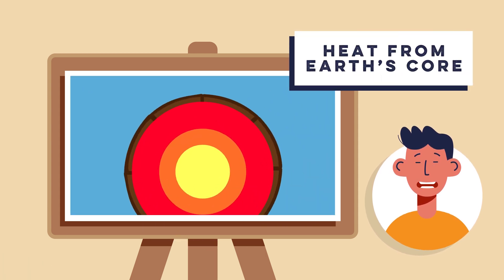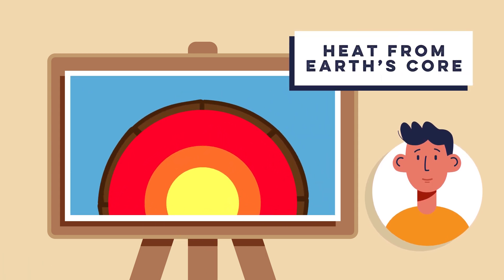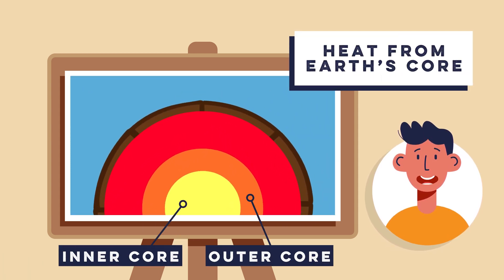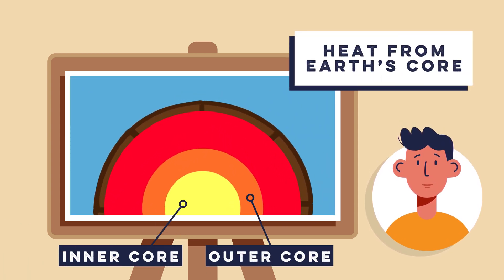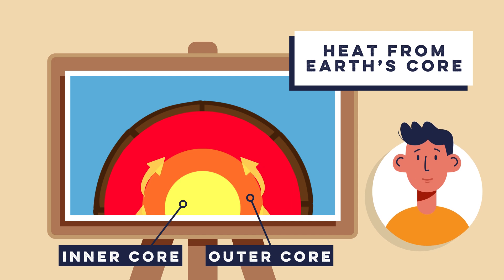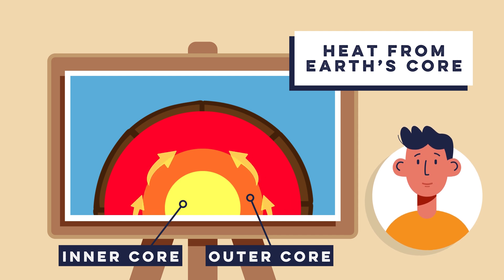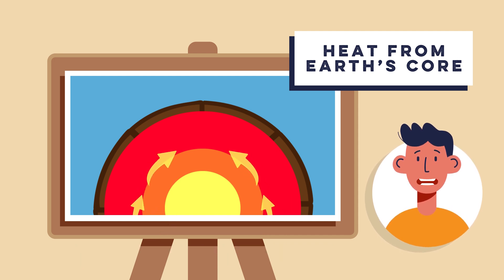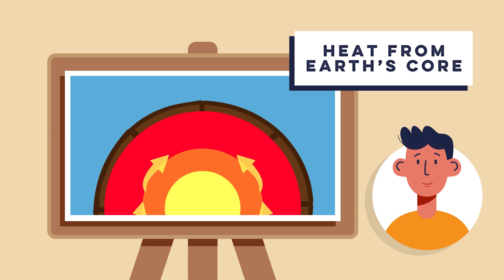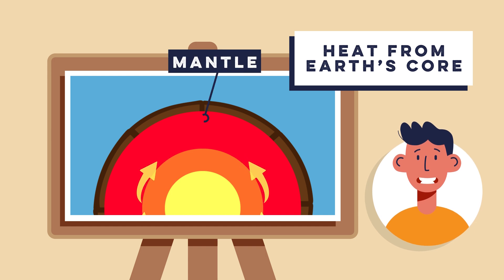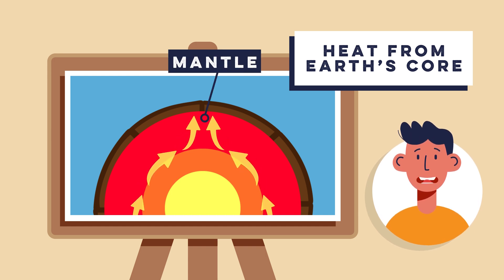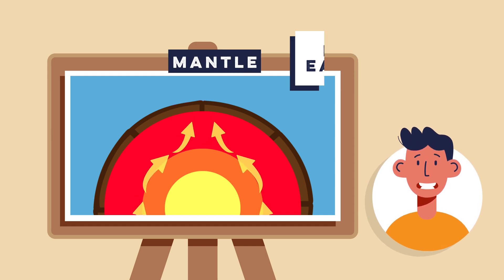Step 1 is heat from the Earth's core. The journey begins deep within the Earth. The core generates heat through radioactive decay and residual heat from the planet's formation. This heat rises towards the mantle, the layer above the core.